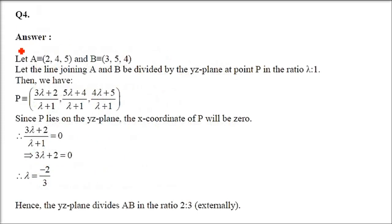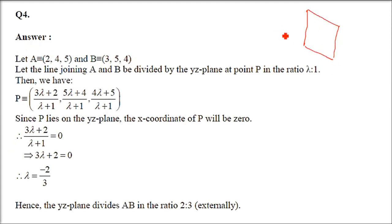Question number 4: Find the ratio in which the line joining 2, 4, 5 and 3, 5, 4 is divided by the YZ plane. Remember: on the YZ plane, X is 0. On the ZX plane, Y is 0. On the XY plane, Z is 0.